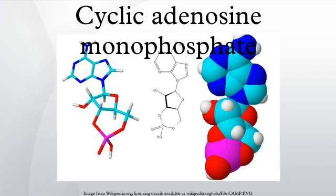cAMP, for example, is involved in the positive regulation of the lac operon. In an environment of low glucose concentration, cAMP accumulates and binds to the allosteric site on CRP, a transcription activator protein. The protein assumes its active shape and binds to a specific site upstream of the lac promoter, making it easier for RNA polymerase to bind to the adjacent promoter to start transcription of the lac operon, increasing the rate of lac operon transcription. With a high glucose concentration, the cAMP concentration decreases and the CRP disengages from the lac operon.